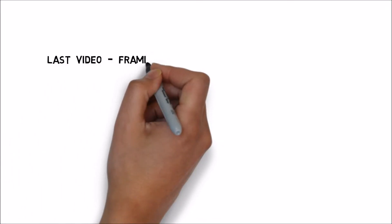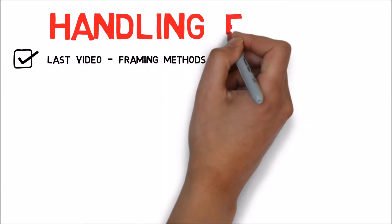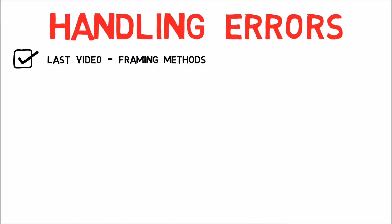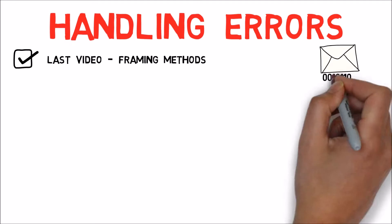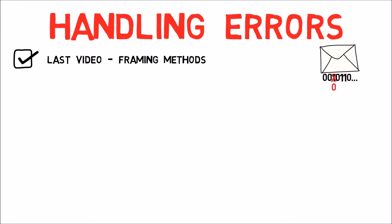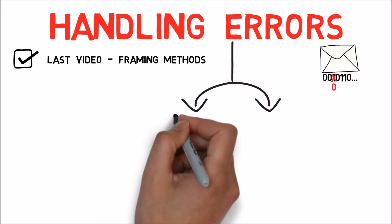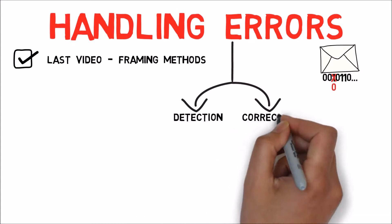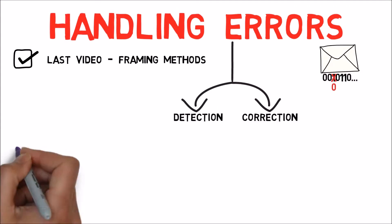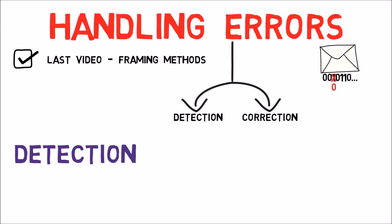In the last video we talked about different framing methods. This time we shall tackle another important issue: handling errors. As we've mentioned in previous videos, when a frame is received it may contain an error. For instance, a single one was mistakenly received as a zero after its transmission. The second layer should handle errors, but how? There are two main approaches for handling errors: detection and correction.